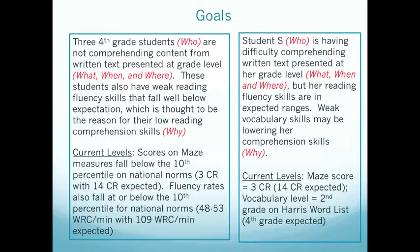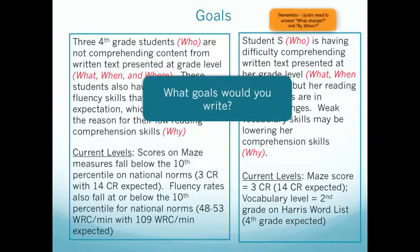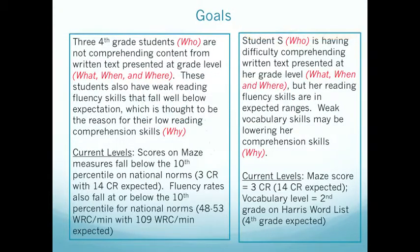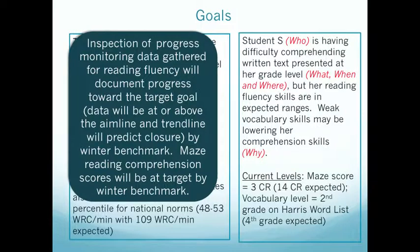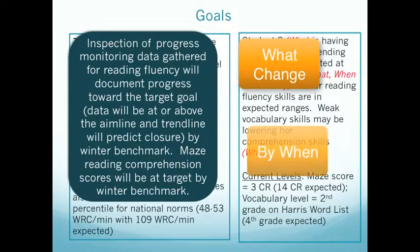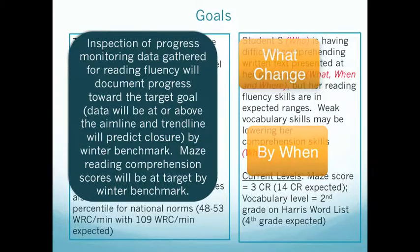Let's look at our precision statements. What goals would you write? Here is one possible goal: inspection of progress monitoring data gathered for reading fluency will document progress towards the target goal — in other words, the data will be at or above the aim line and the trend line will predict closure by the winter benchmark. We have a 'what' and a 'when.' Another example: reading comprehension scores will be at target by the winter benchmark — again, a 'what' and a 'when.'